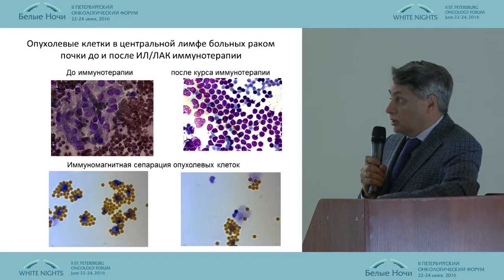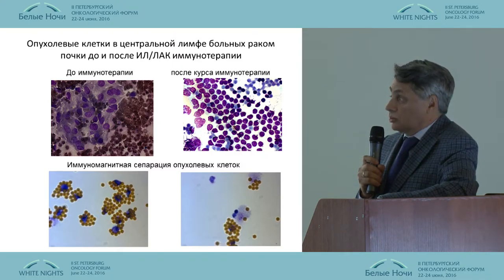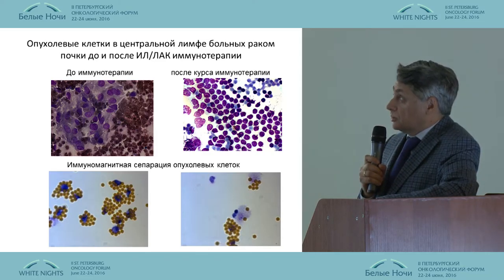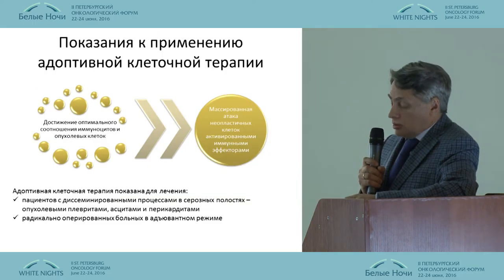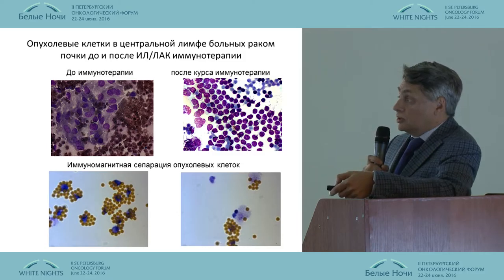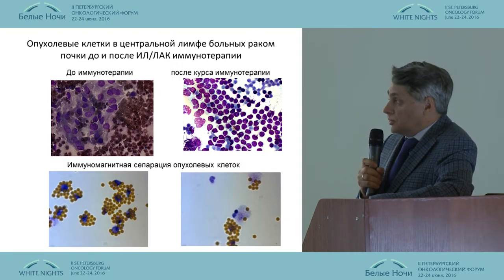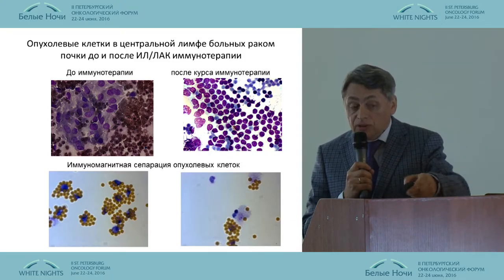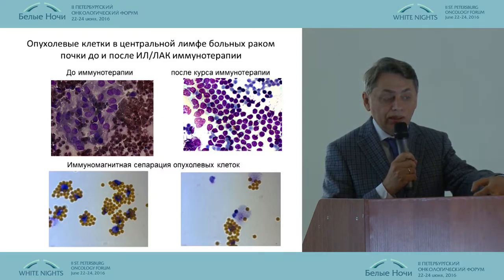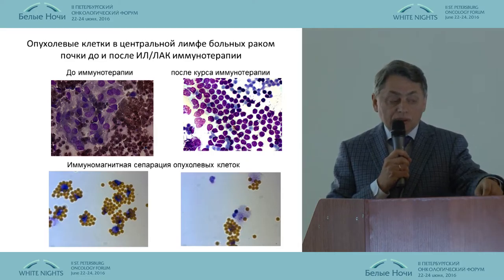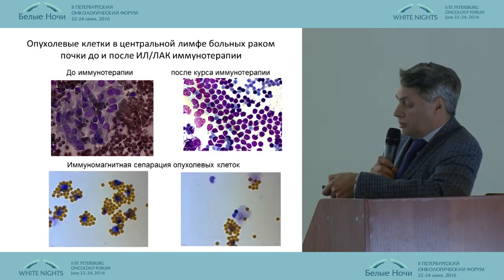This slide shows the results after radical surgeries. We see that the lymph and the blood demonstrate tumor cells in the patient with renal cancer. This slide evidences that in central lymph we have both individual tumor cells and conglomerates. Lymphocytes in central lymph get in contact with billions of lymphocytes, and tumor cells are able to evade immunosurveillance.